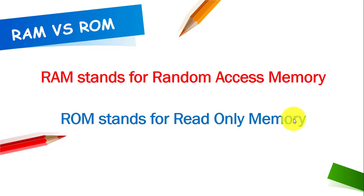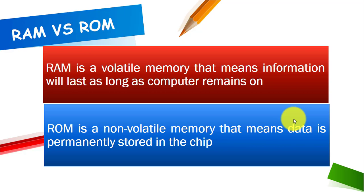RAM stands for random access memory and ROM stands for read-only memory. RAM is a volatile memory — memory can either be volatile or non-volatile. RAM being volatile means information will be lost as long as the computer remains on. If you are working on any file and you shut down your computer or your computer is powered off, then that information will be erased.